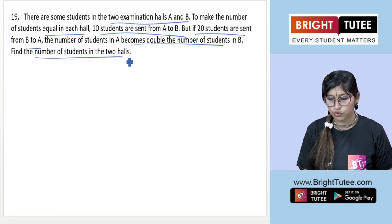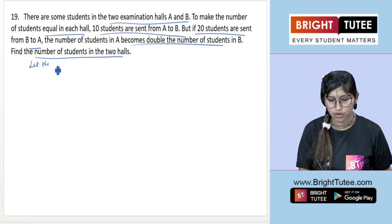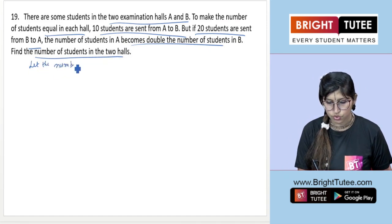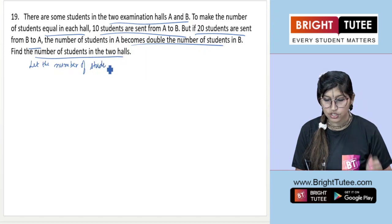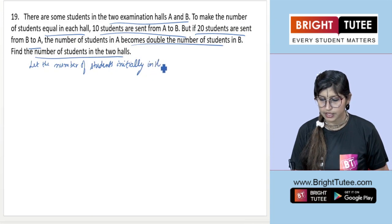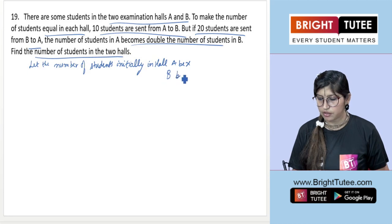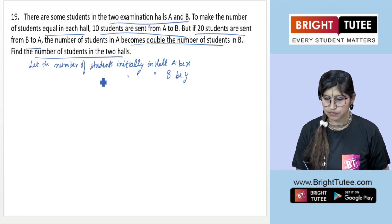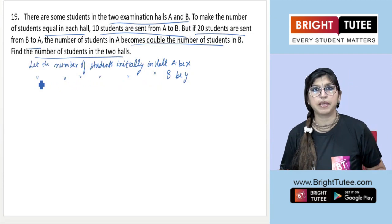We need to find the number of students in both halls. Let the number of students initially in hall A be x and in hall B be y.